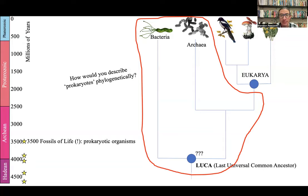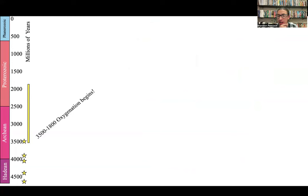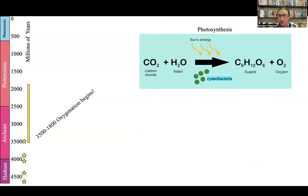Going back to the Earth history side of things — what's going on in the Archean. Life shows up in the beginning parts of the Archean, and then there's still a whole other billion years of the Archean left to go. Starting about 3.5 billion years ago and continuing for quite a long time is the oxygenation of Earth's surface, almost certainly first in bits and starts, but then very solidly because of the evolution of photosynthesis.